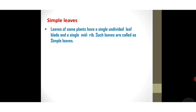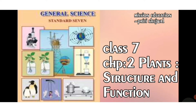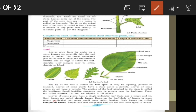Simple leaves: leaves of some plants have a single undivided leaf blade and a single midrib — such leaves are called simple leaves. Here you can see this is the science textbook of seventh class Maharashtra State Board, Chapter 2, page number 12. In this chapter the definition of simple leaf and compound leaf is given.